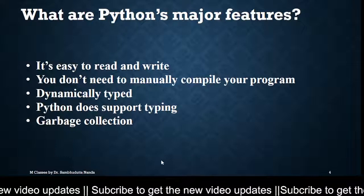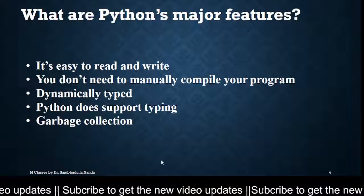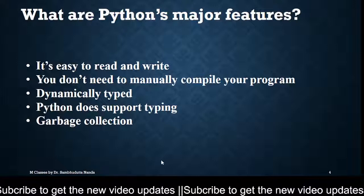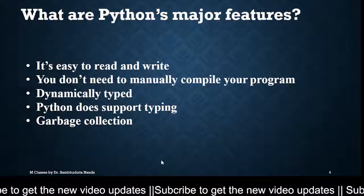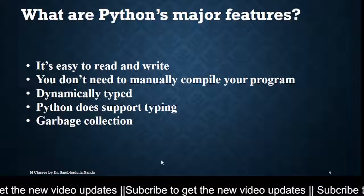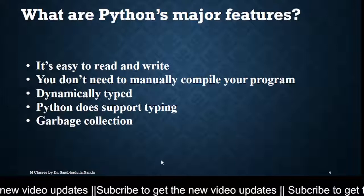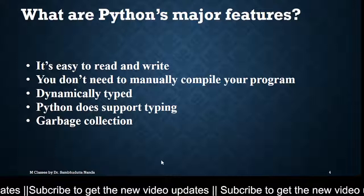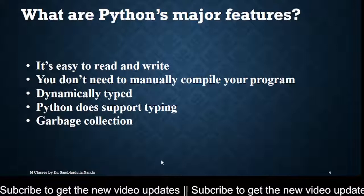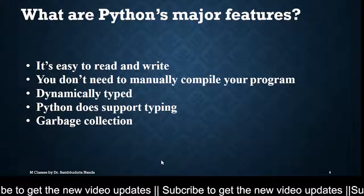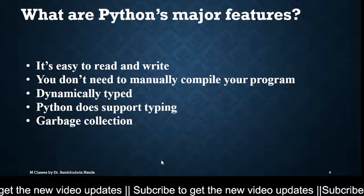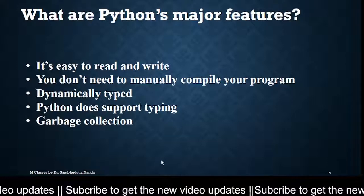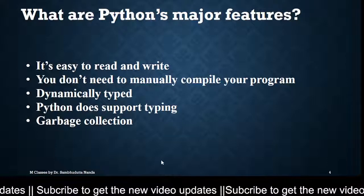Next, you don't need to manually compile your program. In other programming languages, before you run or execute a program, you have to compile it. Compiling is basically the step for the system to understand the program — if the system can understand the program properly, then you can execute it. But in Python, you don't have to do it manually. In languages like C, C++, and Java, you need to compile manually, and if no error is there, then you can execute. But in Python, manual compilation is not required — the program compiles itself automatically.